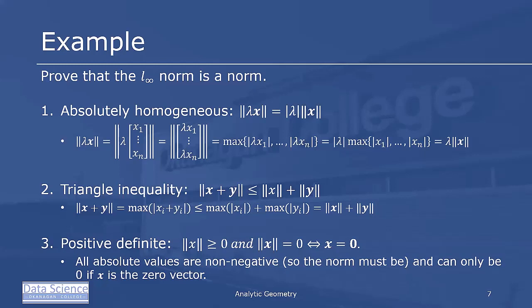Property two is the triangle inequality: we need to prove the norm of x plus y is less than or equal to the norm of x plus the norm of y. The norm of x+y equals max of |xi + yi|. The largest sum of xi + yi must be less than or equal to the largest x plus the largest y, because the largest sum is not necessarily the sum of the two individually largest values — they may not occur on the same row. So max(|xi + yi|) ≤ max(|xi|) + max(|yi|), which equals the norm of x plus the norm of y.